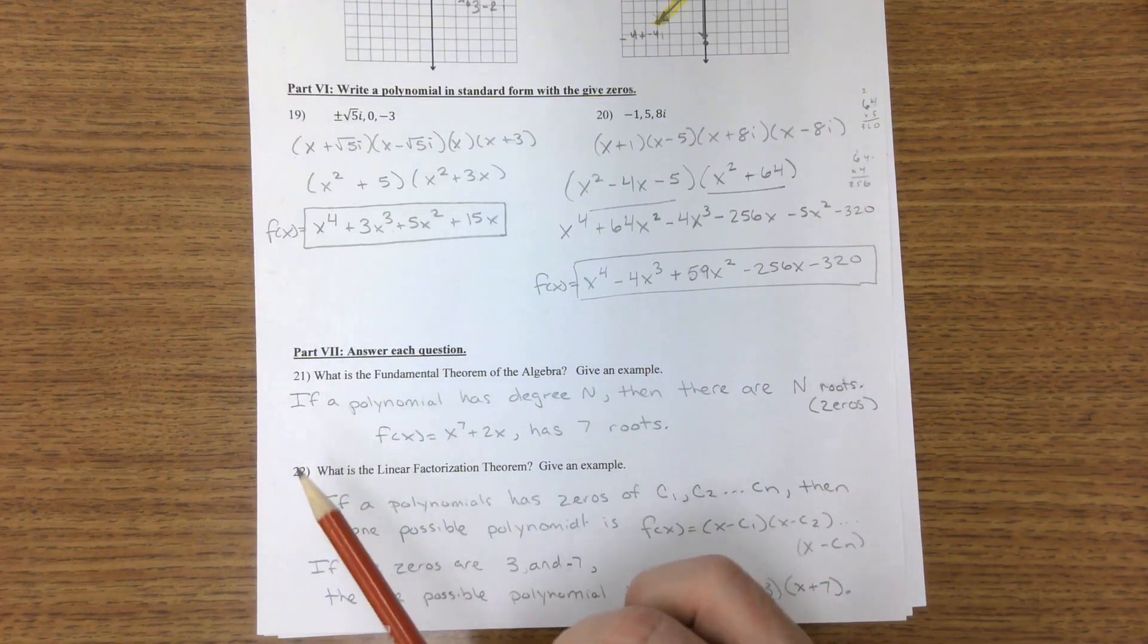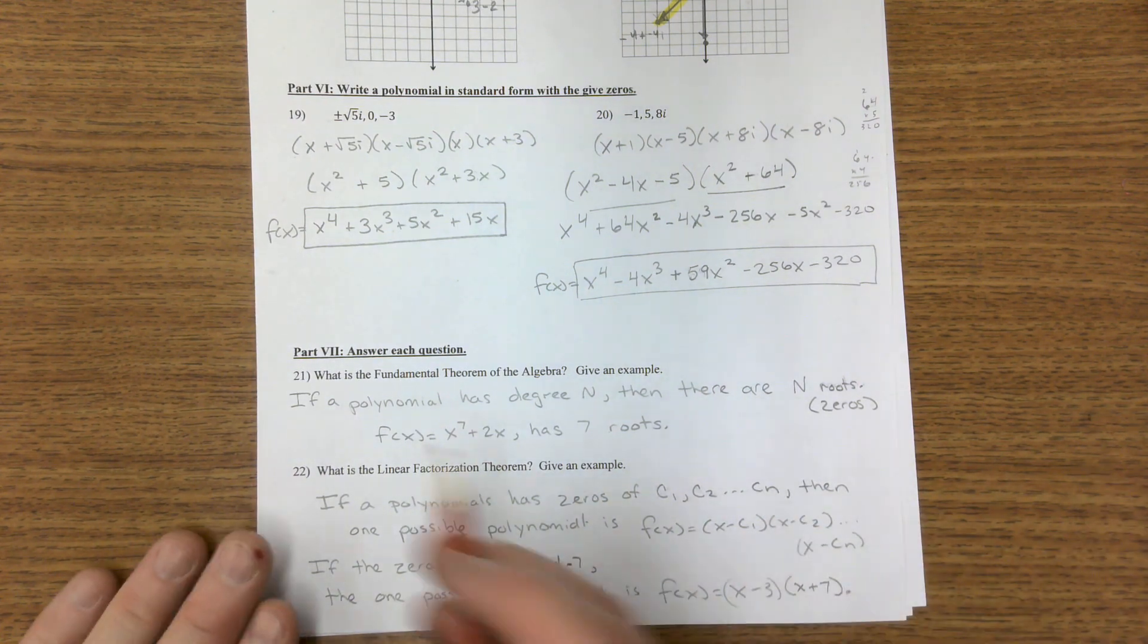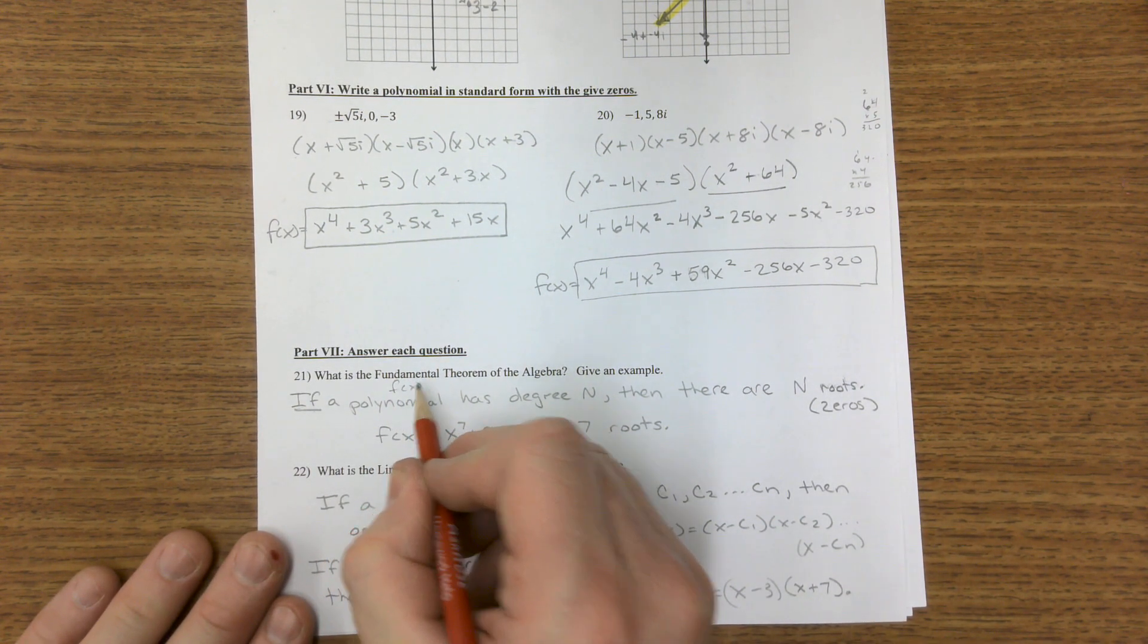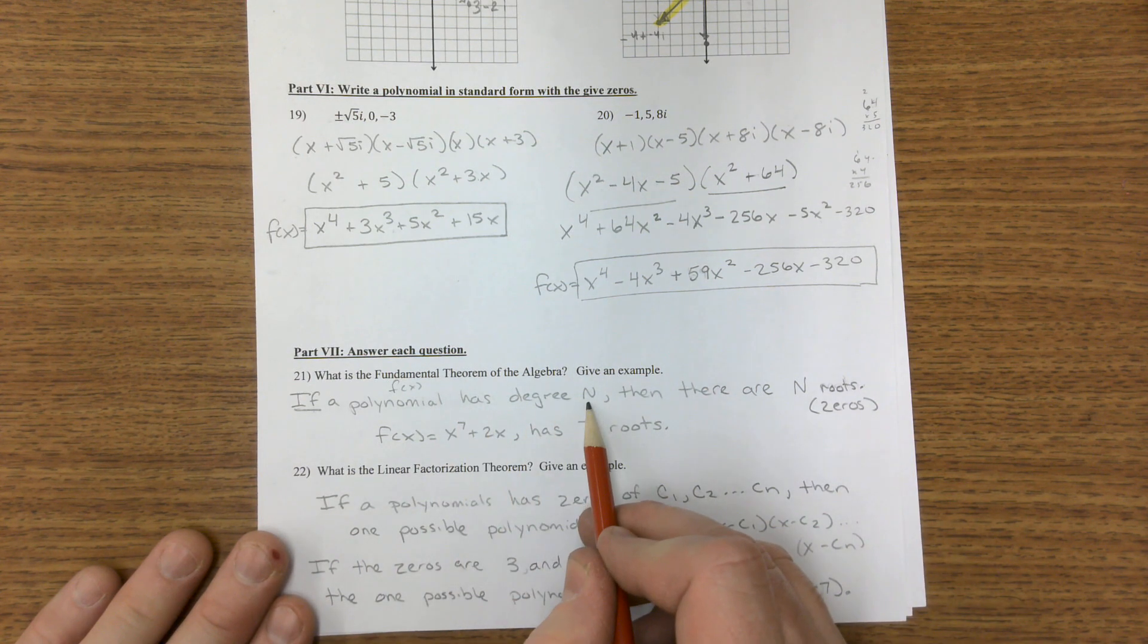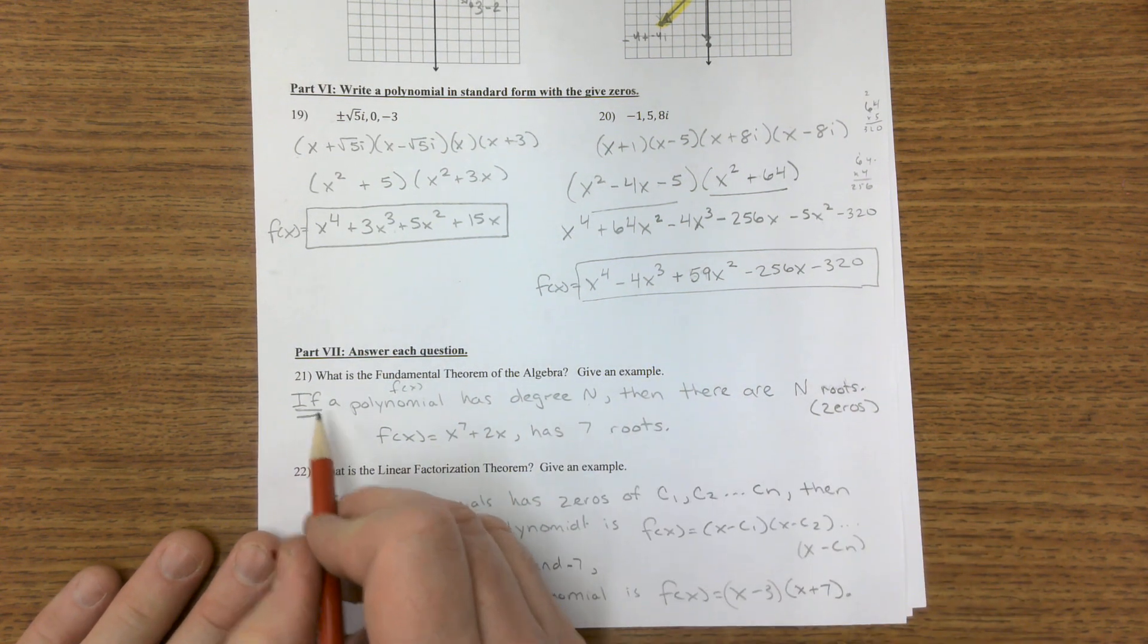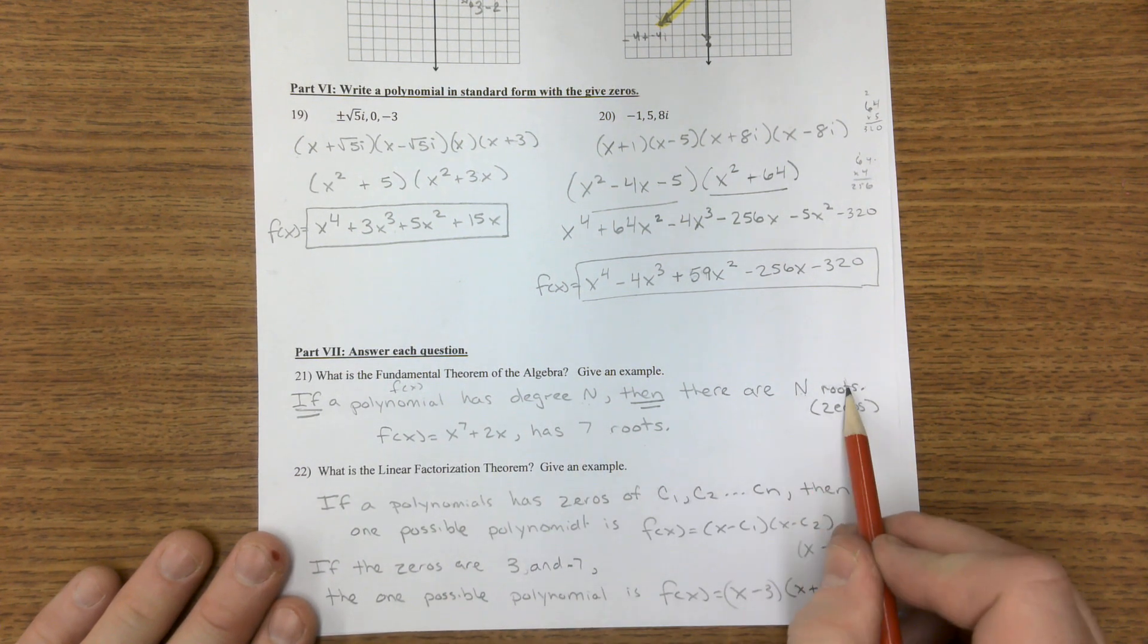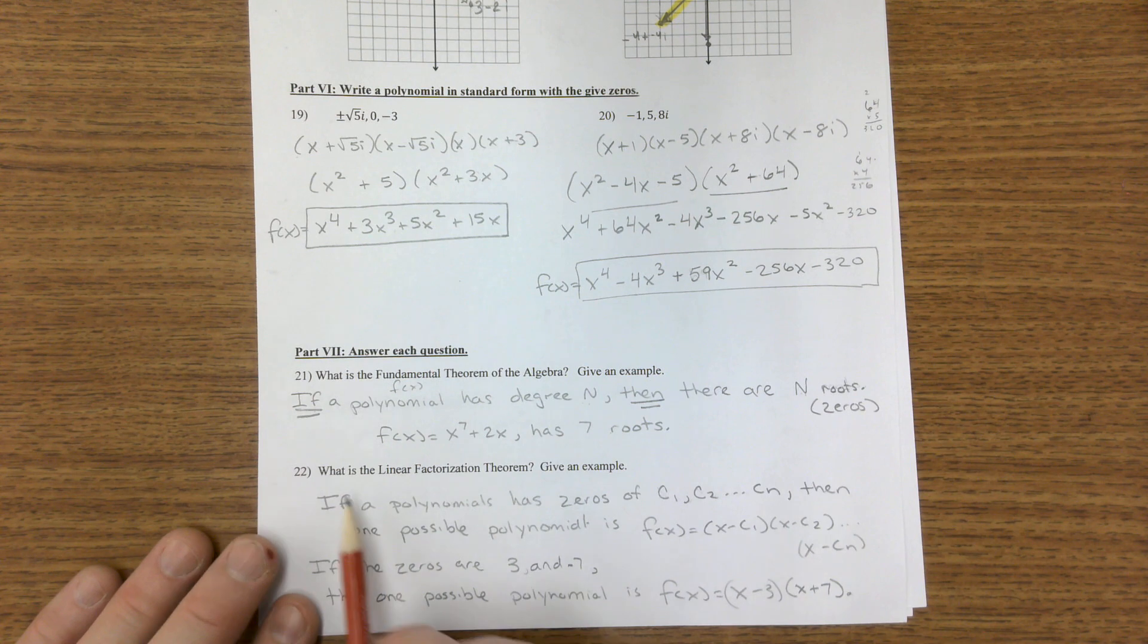21, Fundamental Theorem of Algebra. If a polynomial, or if f of x, if you want to make it simple, has degree n, then there's n roots. If degree n, then n roots. There's a simple example.